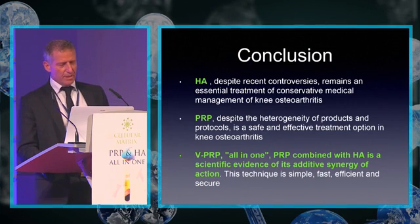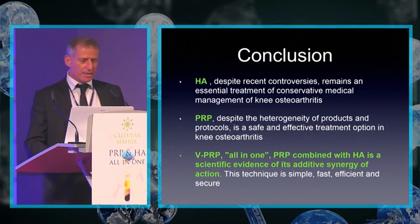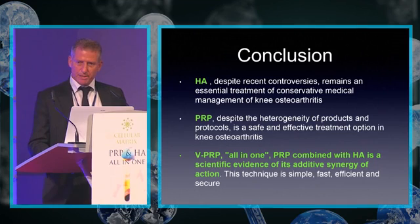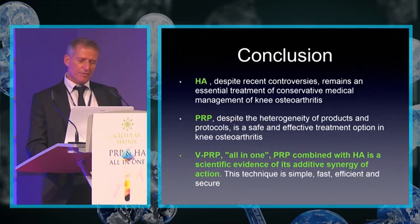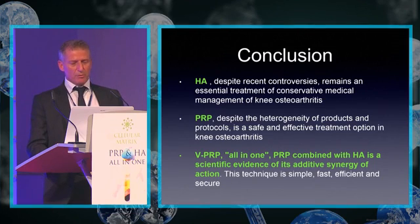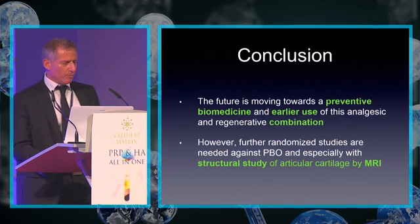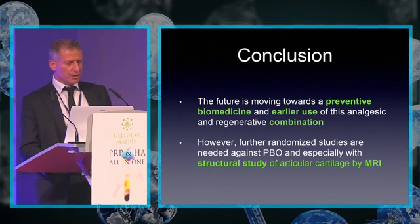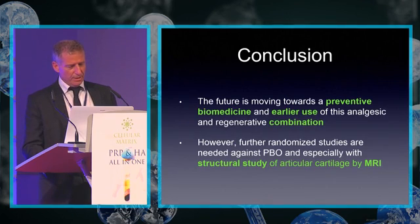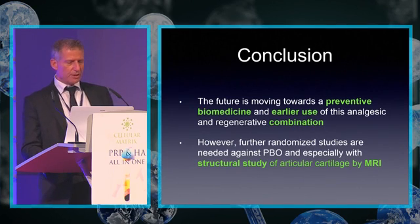In conclusion: HA, despite recent controversy, remains an essential treatment in conservative medical management for knee osteoarthritis. PRP, despite the heterogeneity of products and protocols, is a safe and effective treatment option. VPRP — the all-in-one PRP combined with HA — has scientific evidence of additive synergistic action; the technique is simple, fast, efficient, and secure. The future is moving towards preventive biomedicine and the earlier use of this analgesic and regenerative combination. However, further randomized studies are needed against placebo, especially with structural studies of articular cartilage by MRI.